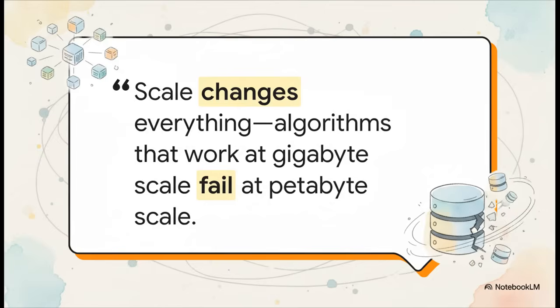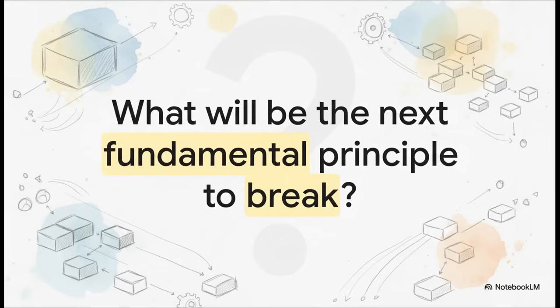If you take just one thing away from all of this, let it be this: the entire field of big data exists because scale changes everything. The rules, the tools, the entire way you think about a problem—it all has to change when you go from gigabytes to petabytes. Scale is the ultimate game changer. And that leaves us with one final big question. We've figured out how to handle the challenges of storage, processing, and coordination for today's scale. But the amount of data we're creating is just accelerating like crazy. So what's next? What fundamental rule or assumption that we rely on today is going to be the next one to break?